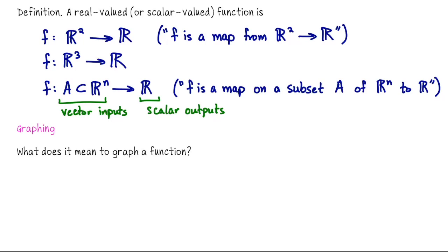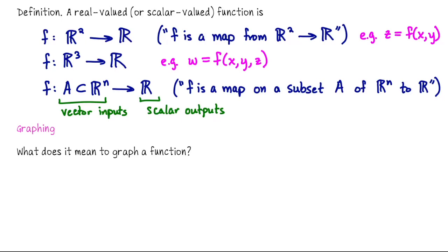Let me write down the typical notation for the first two cases. When we have a scalar-valued function of two variables, that's going to look like z is a function of x and y. If our function is a map from R³ to R, we might think of that as w is a function of x, y, and z. A function from R to R, like in single-variable calculus, is of the form y equals f of x — so this is just generalizing that notion.